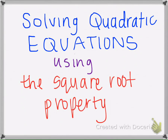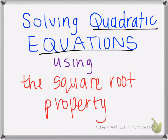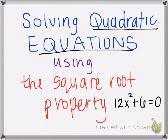This video is on solving quadratic equations using the square root property. A quadratic equation is an equation such that the highest exponent, or the degree, is 2. For example, 12x squared plus 6 equals 0 is a quadratic equation because the highest exponent is 2.